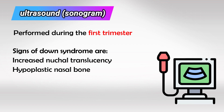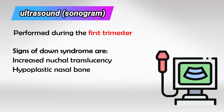Now both of these tests — the maternal blood and the ultrasound — are not very specific. They can give you a high probability or chance of Down syndrome, but if you want a more specific test, you'll have to go invasive.